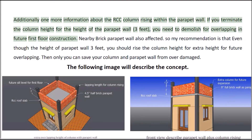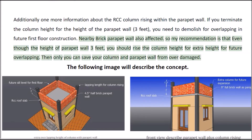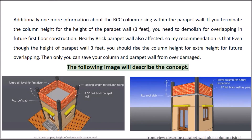Additionally, one more point about the RCC column rising within the parapet wall. If you terminate the column height at the height of the parapet wall — 3 feet — you will need to demolish it for overlapping in future first floor construction, and the nearby brick parapet wall will also be affected. My recommendation is that even though the height of the parapet wall is 3 feet, you should raise the column height to an extra height for future overlapping. Then only can you save your column and parapet wall from damage. The following image will describe this concept.